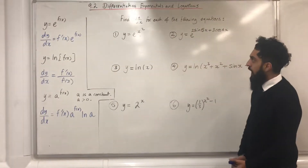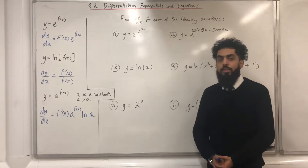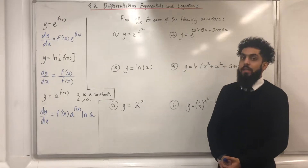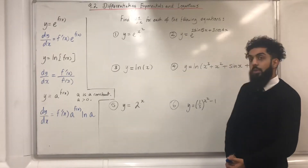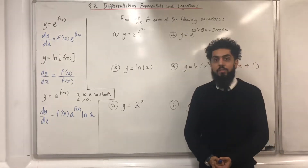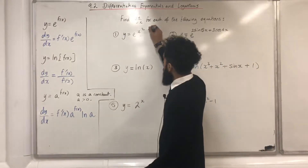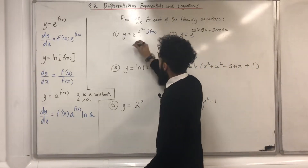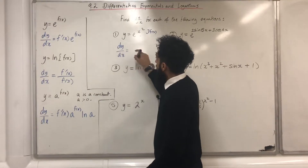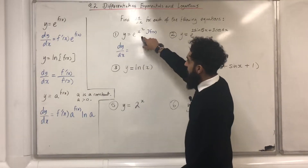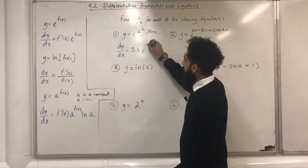I've got 6 equations on the board and for each of these equations I want to find dy/dx. Question number 1: y equal e to the power x². My x² is the f(x). dy/dx is equal to — I differentiate x² and I get 2x — e to the power x².